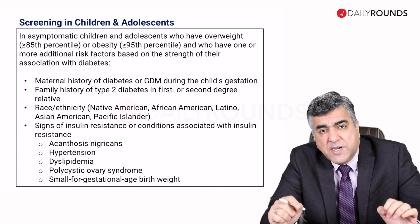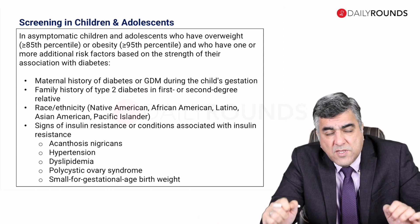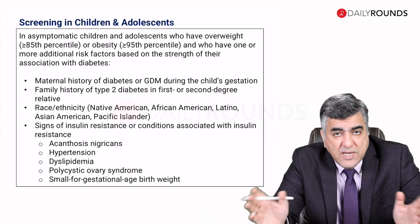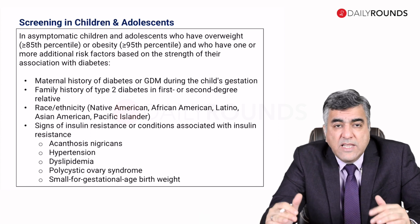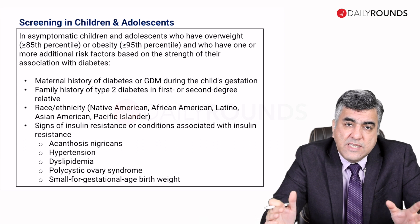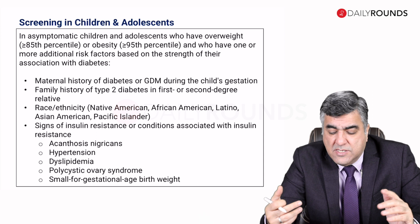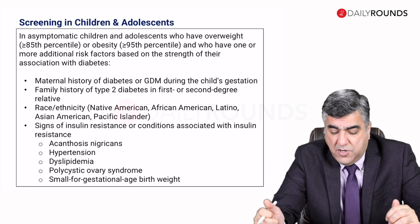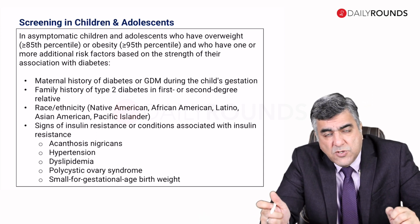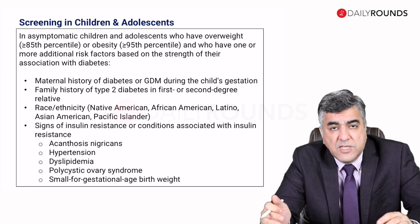These are specific recommendations for screening in children and adults. Those with a family history of type 2 diabetes in a first or secondary relative — which would include a large number of individuals — and those from races and ethnicities with higher incidence such as Americans, Asians, African-Americans, and Latinos. Also those children and adults who may have signs of insulin resistance or conditions associated with insulin resistance.